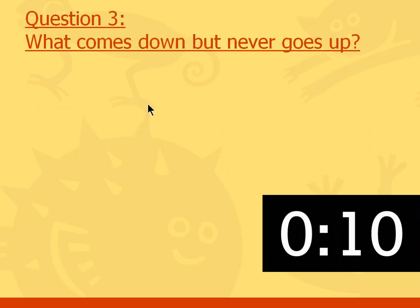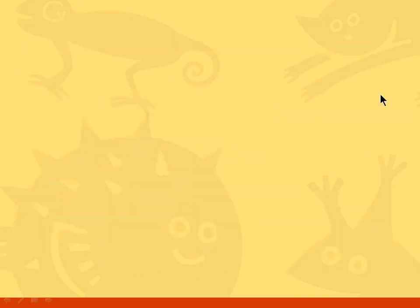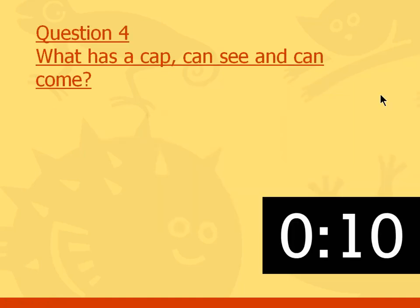Question number three: what comes down but never goes up? I know it is the opposite of the last question. The answer is rain. Rain comes down but never goes up.